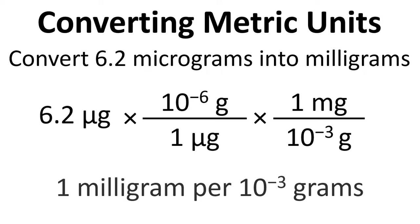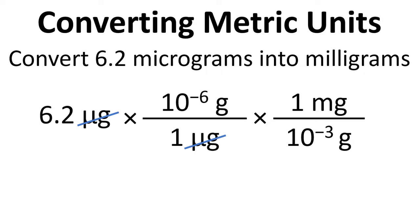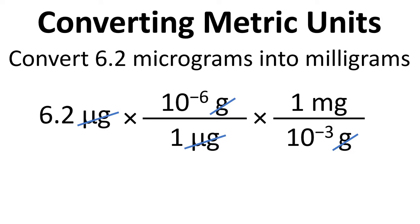So if we write this down, when we cancel the units out, the micrograms cancel, the grams cancel, and we're just left with milligrams. So it's 6.2 times 10 to the minus 6 divided by 10 to the minus 3 equals 6.2 times 10 to the minus 3 milligrams.